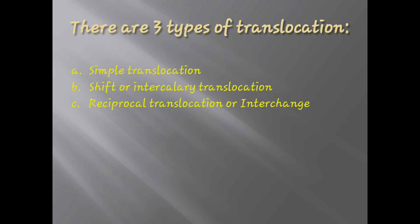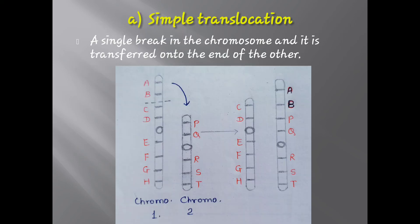There are three types of translocation: simple translocation, shift or intercalary translocation, and reciprocal translocation (also called interchange). In simple translocation, a single break in the chromosome occurs and the broken segment is transferred onto the end of another chromosome. As seen in the diagram, a single break occurs in chromosome 1 between segment B and C, and the broken segment A and B is transferred to another non-homologous chromosome and joins it — this is simple translocation.